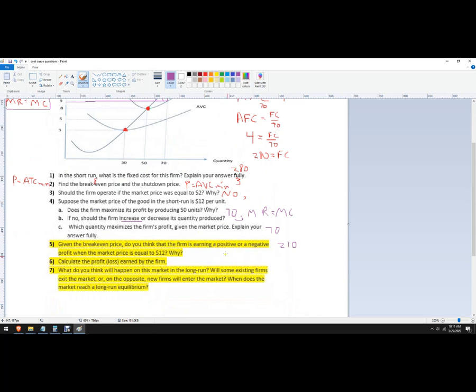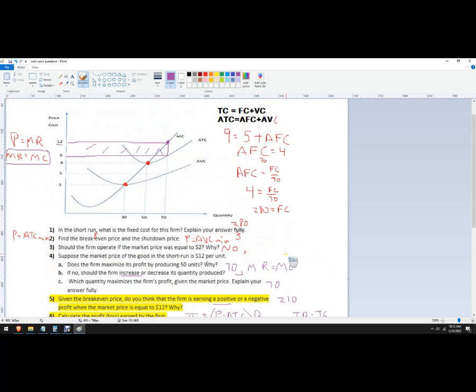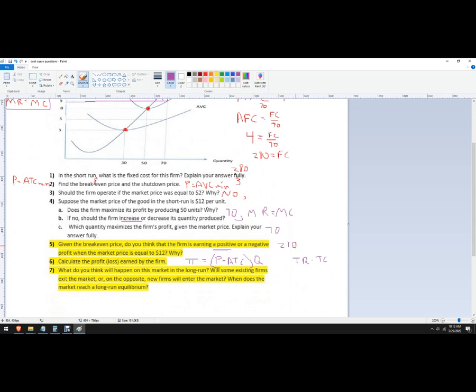Okay calculate the profit or loss earned by the firm. Well that was what we just did. It's a positive profit and it would be, if you wanted to write out the formula here, profit as pi will be the price minus average total cost times quantity. You can also do this a little bit longer. You can calculate the total revenue and subtract the total cost. So in that case you would multiply 12 times 70. That's your total revenue and then 9 times 70. That's your total cost. You'll get the same answer. You're getting 210 either way.